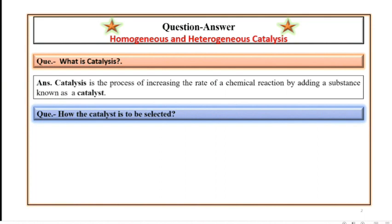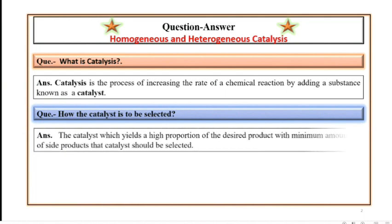How the catalyst is to be selected? The catalyst which yields a high proportion of the desired product with minimum amount of side products, that catalyst should be selected.